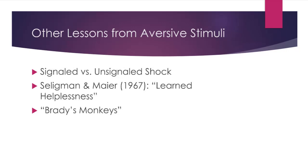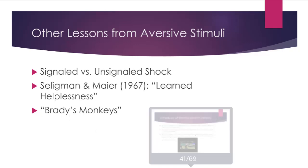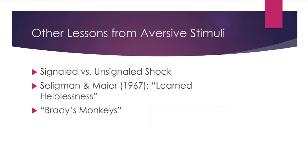In this video, we're going to talk about some other lessons that we've learned from aversive stimuli. Aversive stimuli, in particular shock, have been used to study the effects of bad things because it can simulate bad things in life and stressors. I'm going to talk about three particular series of examples: signaled versus unsignaled shock, the Seligman and Meyer paper that you read, and briefly some follow-up similar studies with Brady's monkeys.